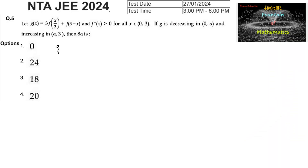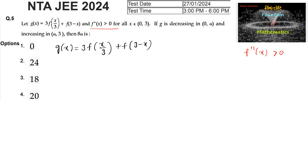Let g(x) = 3f(x/3) + f(3-x), and f''(x) > 0 for every x in (0, 3). g is decreasing in (0, α) and increasing in (α, 3). We need to find 8 times α. So let's differentiate this function.